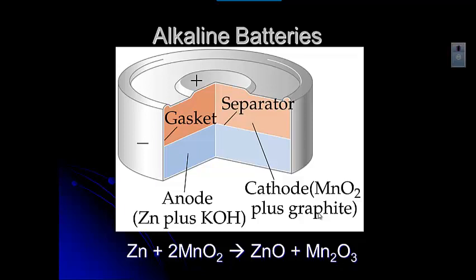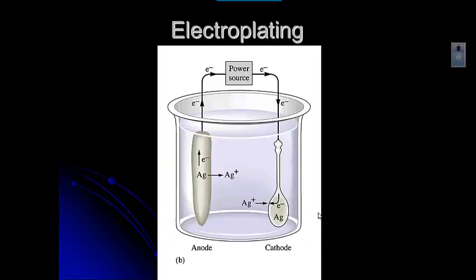So the anode is the negative end. And again, that flow of electrons is what causes the alkaline batteries to provide the energy that our things need. Electroplating is actually pretty cool. What happens is you hook a lump of whatever metal you're going to plate with.